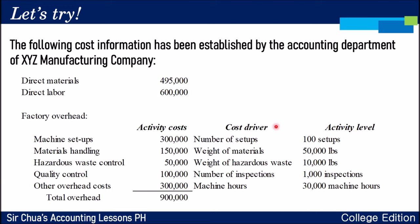The cost drivers are: Machine Setups — 100 setups; Materials Handling — 50,000 pounds; Hazardous Waste Control — 10,000 pounds; Quality Control — 1,000 inspections; and Other Overhead Costs — 30,000 machine hours. These are then broken down per product line: Product X, Product Y, and Product Z, with the direct materials of $150,000, $180,000, and $165,000 respectively, and direct labor of $200,000 each. The activity usage per product is also specified — for example, Product X had 45 machine setups, Product Y handled 10,000 pounds of materials, and Quality Control inspections totaled 400 for X, 200 for Y, and 400 for Z.